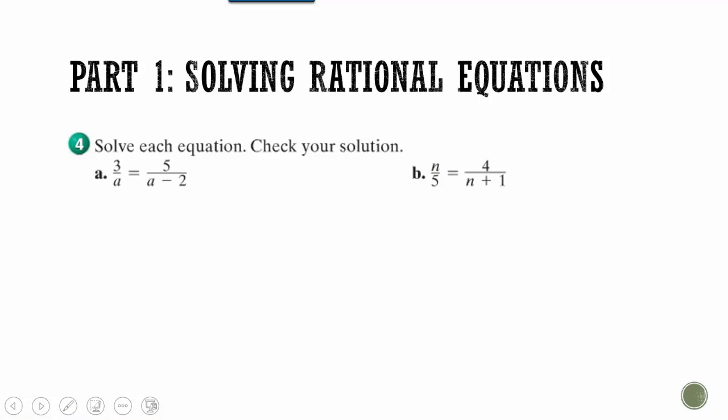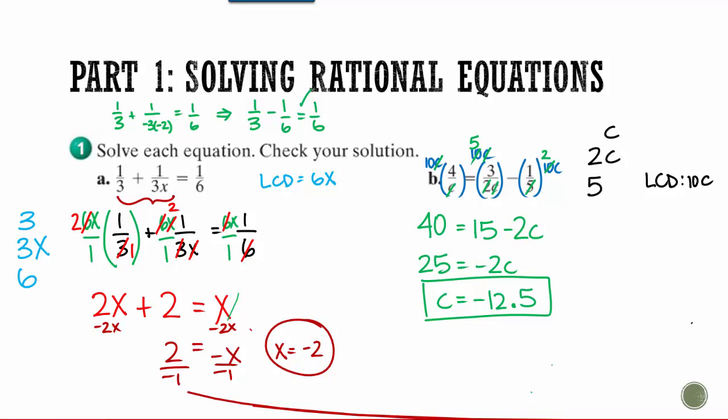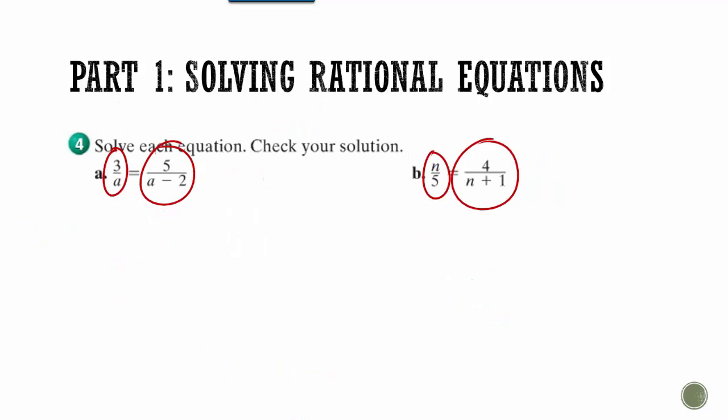The second type is going to look like this. They look a little different because there is only one fraction on each side. So here's one fraction. It equals another fraction. One fraction equals another fraction. Or if you go back to this one, it had fractions to add equal another one. So these ones are a little different. And the way that we can solve these is a little easier.